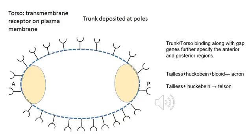The anterior and posterior regions are also defined by the presence of an acron or a telson. A torso receptor is present throughout the plasma membrane, but the trunk ligand is deposited only at the poles. This receptor-ligand binding, along with the expression of several gap genes, specifies whether an acron or a telson is formed.